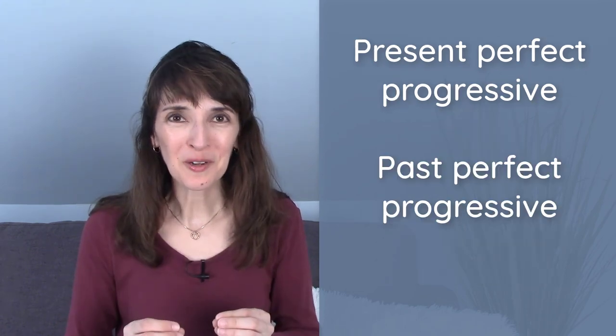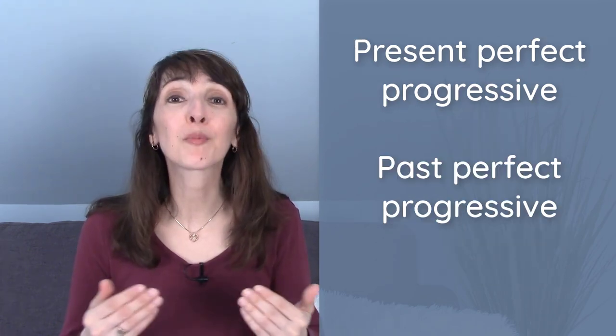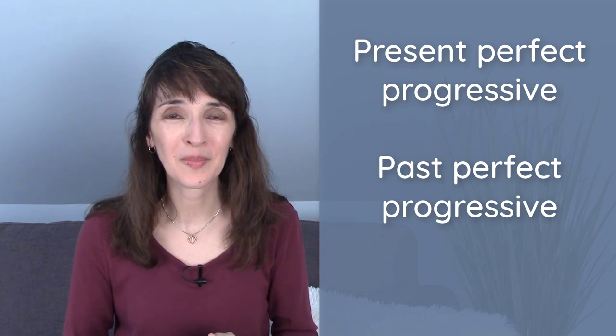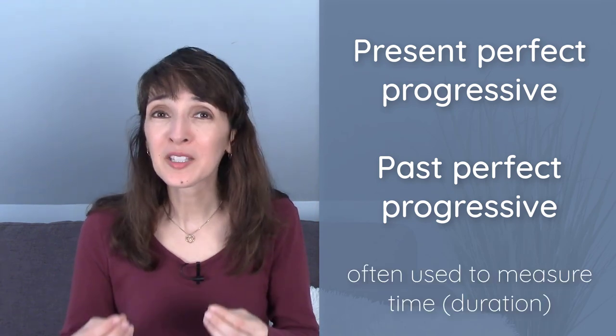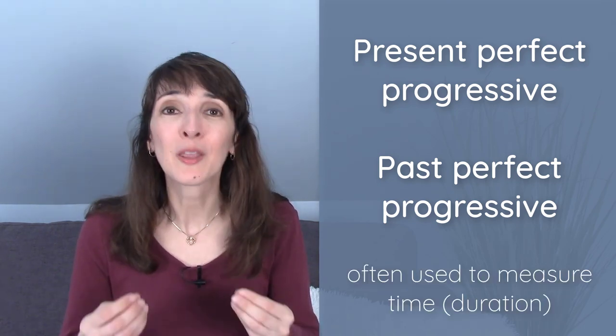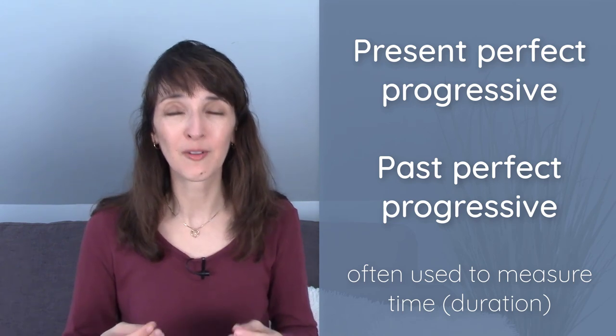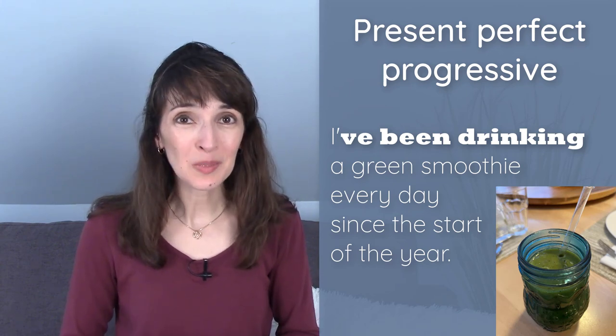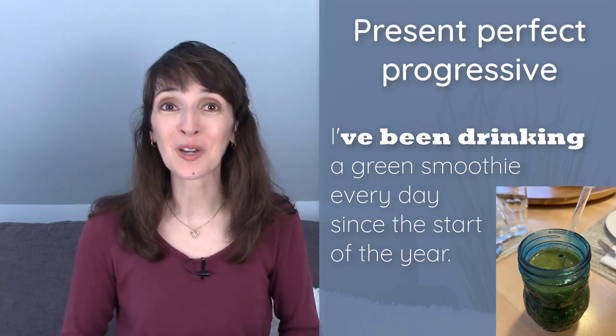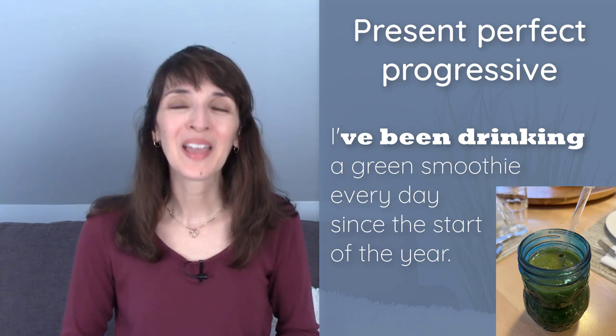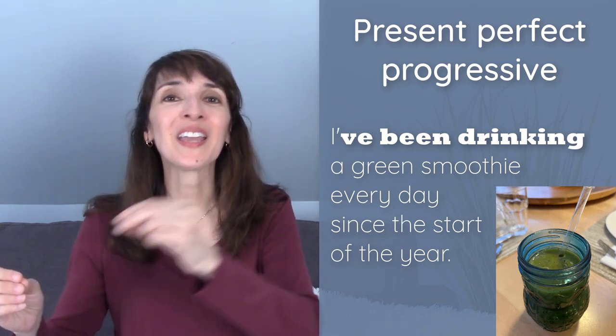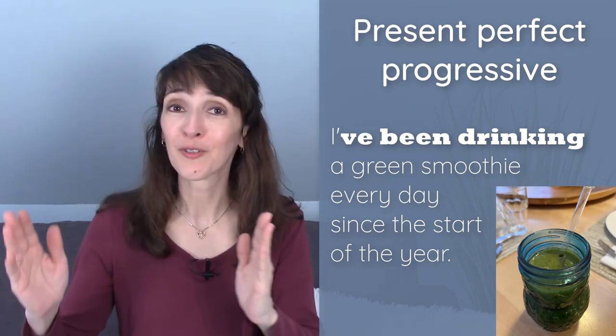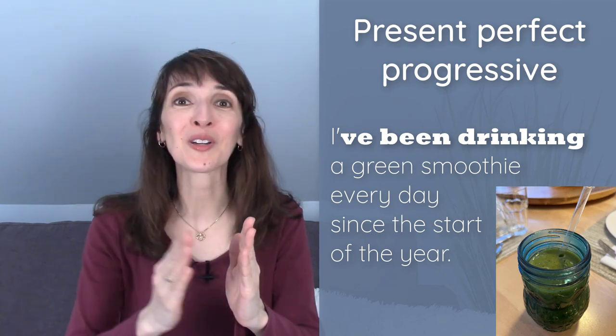Both the present perfect and the past perfect have progressive verb forms. We often use the present perfect progressive and the past perfect progressive to measure time. I've been drinking a green smoothie every day since the start of the year. So it began in the past and it continues to now. For how long? Since the start of the year.